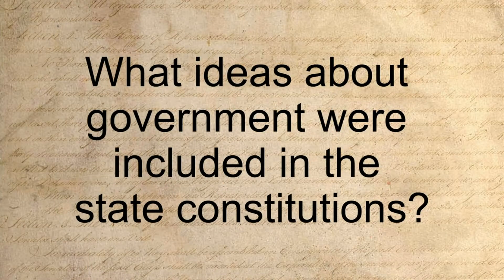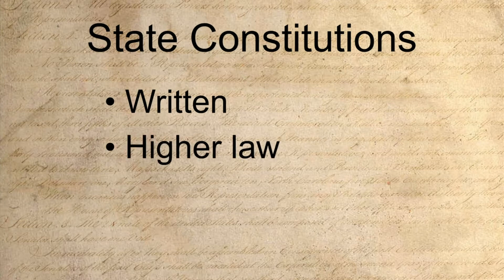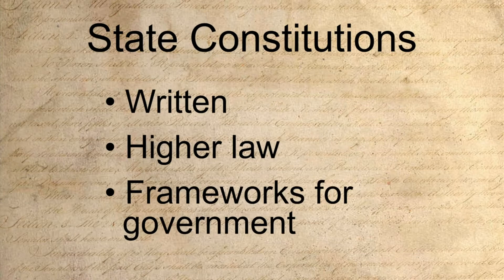What ideas about government were included in the state constitutions? All of the states agreed that their constitution should be written, as opposed to remaining unwritten like the British Constitution. They all agreed that their constitution would serve as a higher law — a framework identifying the branches of government, their powers and limitations, and how those branches should interact. There was a major choice made to continue the tradition of a constitution as a fundamental structural document rather than a policy document.